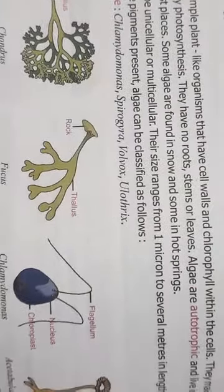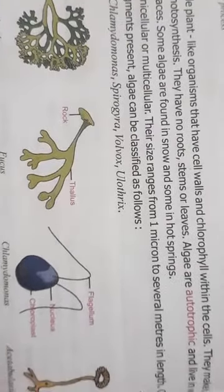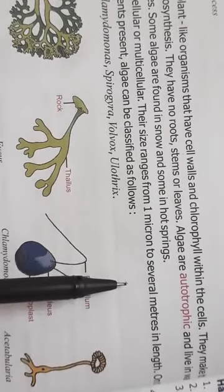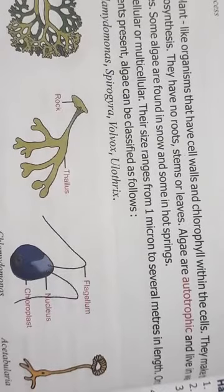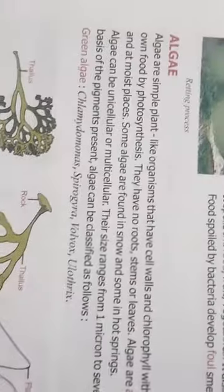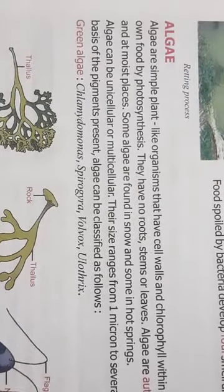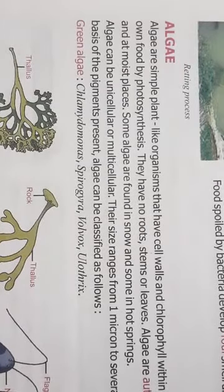So, what is the size? The size ranges from one micron to several meters in length. Now, on the basis of the pigments present - pigments are the colors - algae can be classified into the following categories. The first one is green algae.